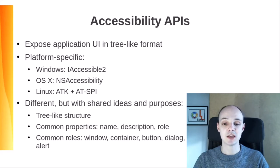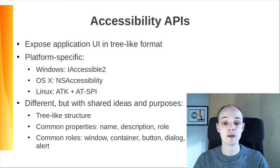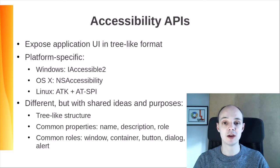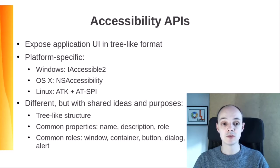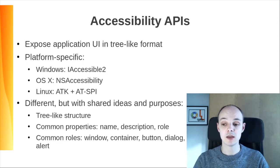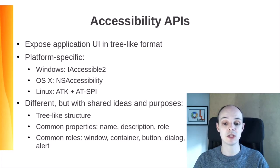They share the tree-like structure and common properties like name, description, and role. Role is an important property that defines the expectations regarding the behavior of a UI component and also defines its API. Common roles are window, container, button, dialog, and alert. They have different names in each of the different APIs, but there are usually equivalent roles in each of them.